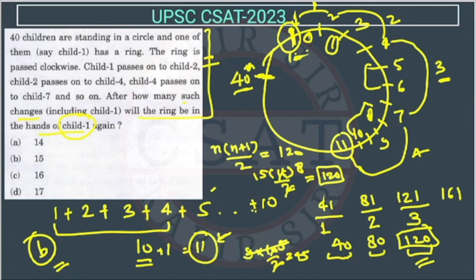So the position will be 120 plus 1. So it will be on the first child. So the difference will be from first to 15. So now the question is asking after how many such changes will the ring be in the hand of child 1 again? So n is 15. So the answer will be option B. So after 15 changes.